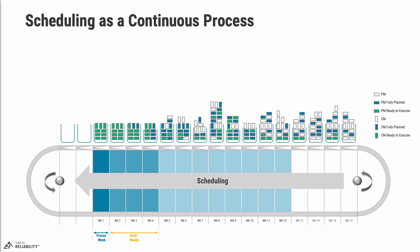One important scenario is what happens when emergency work breaks into the frozen week. We'll have work that was ready to execute that we don't complete, and because emergency work is planned on the fly, we execute it with lower productivity — a job that would take two hours if fully planned can easily take six or eight hours as we scramble to get isolations in place, find materials and parts, etc. This means rescheduling a lot of work out of the frozen week into week 2, then from week 2 to week 3, and from week 3 to week 4. You can see the ripple effect a single emergency job can have — this is another reason why it's so important to protect your schedule and keep emergency maintenance to an absolute minimum.